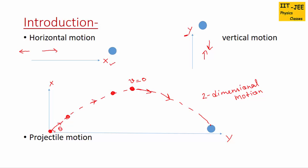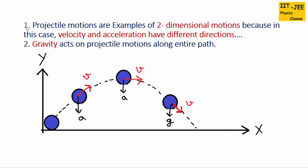In this case, gravity acts on the ball all the time downward along the entire path. That's why gravity pulls the ball down, so the ball follows a curved path, going up and then coming down. Projectile motion is an example of two-dimensional motion because velocity and acceleration have different directions.